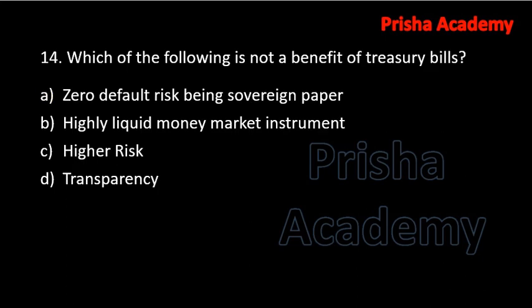Next question: which of the following is not a benefit of treasury bills? Options are zero default risk being sovereign paper, highly liquid money market instruments, high risk, and transparency. Since treasury bills are issued by the government, risk is negligible. Therefore option C — high risk — is the answer, as this is not a benefit of treasury bills.